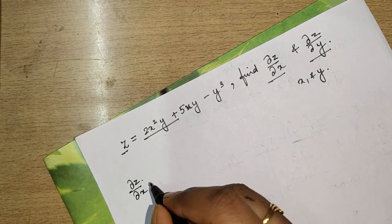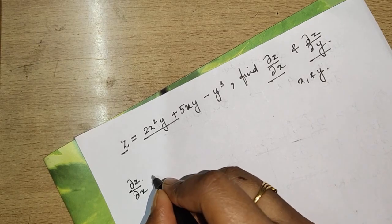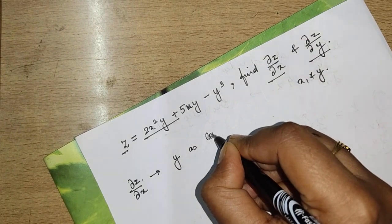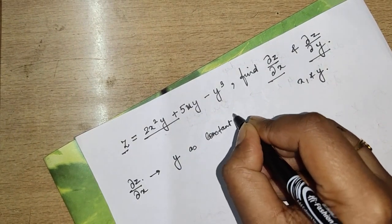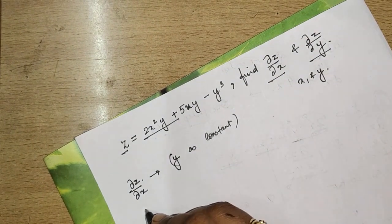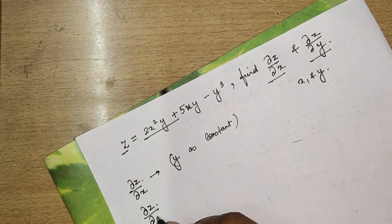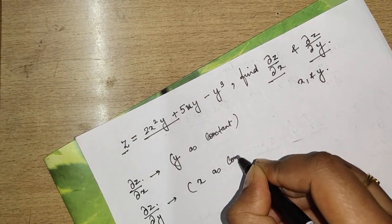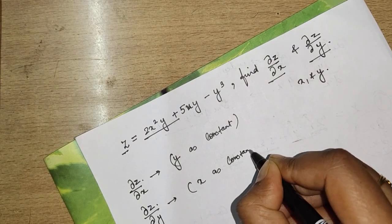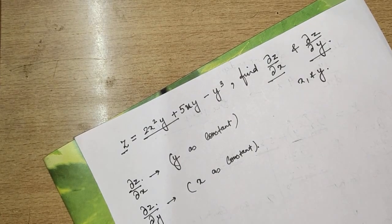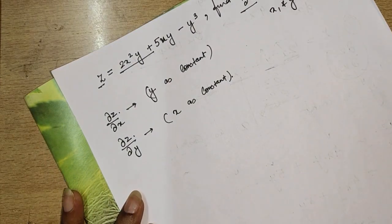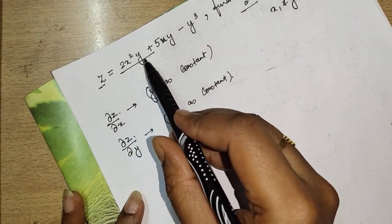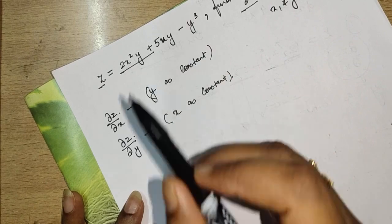When we find ∂z/∂x, we take y as constant. And when we find ∂z/∂y, we take x as constant. All other differentiation rules remain the same. The question is z = 2x²y + 5xy − y³.